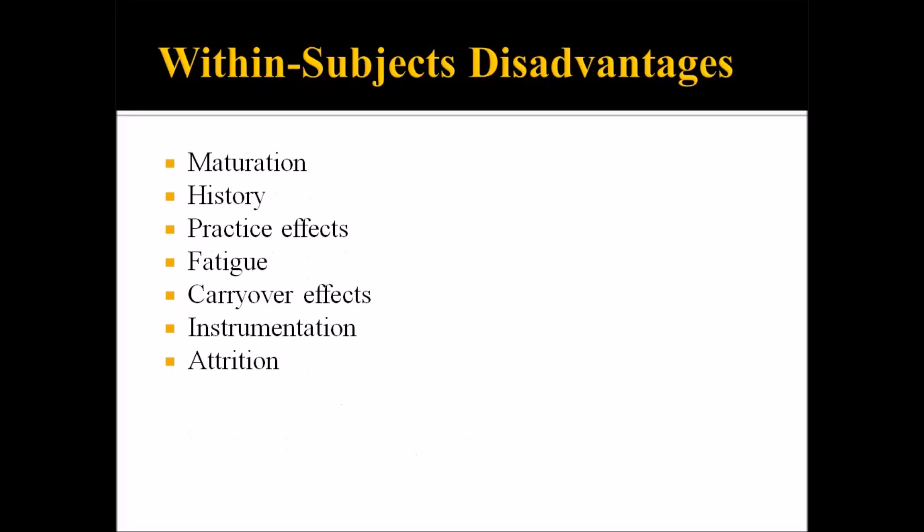Finally, let's look at the disadvantages of within-subjects designs. Within-subjects designs often take place over a larger period of time than between-subjects designs, so they're more subject to the internal validity threat of maturation — where a biological, psychological, or emotional process within a participant changes over the course of the study. With longer studies, the risk of a history threat to internal validity also increases. The history threat is when an event unrelated to the treatment occurs during the study and influences the dependent variable.